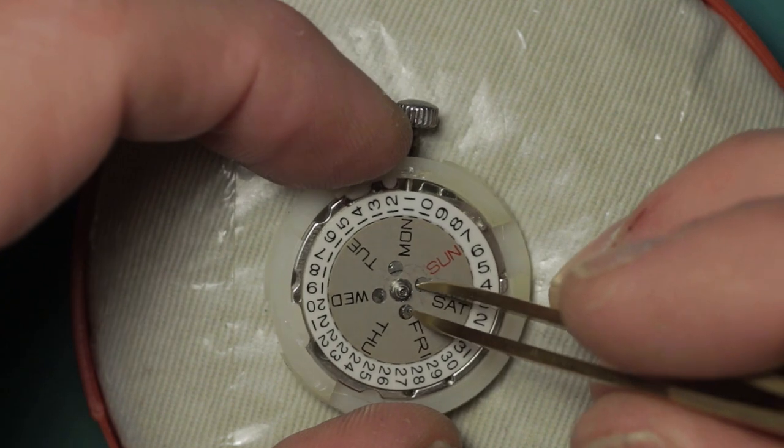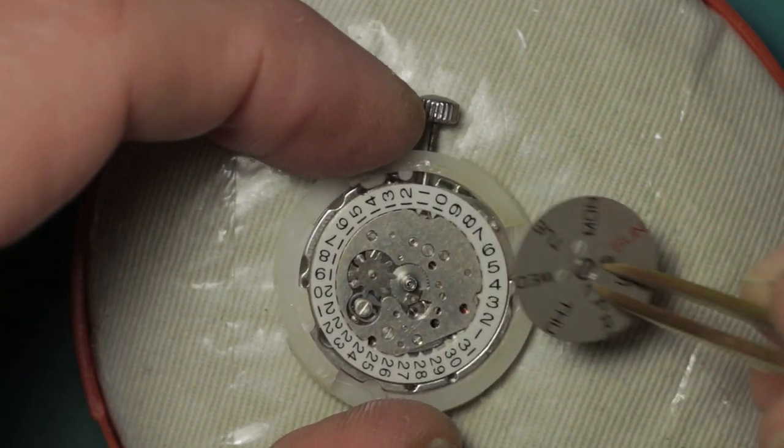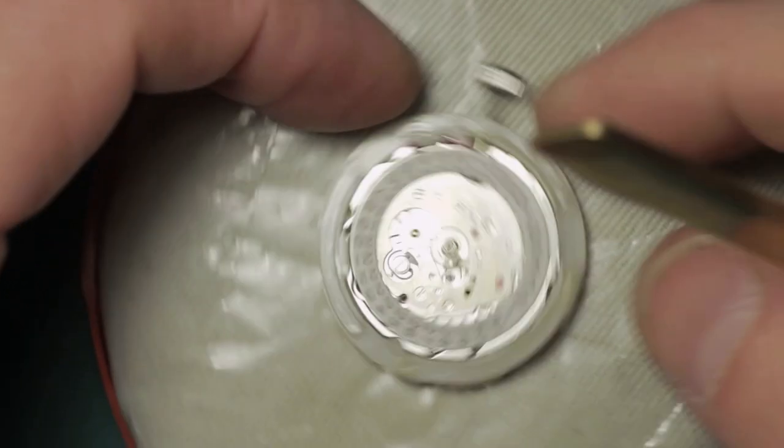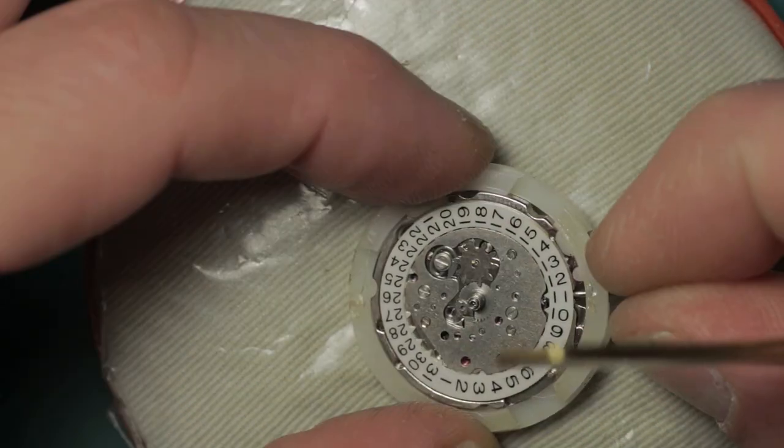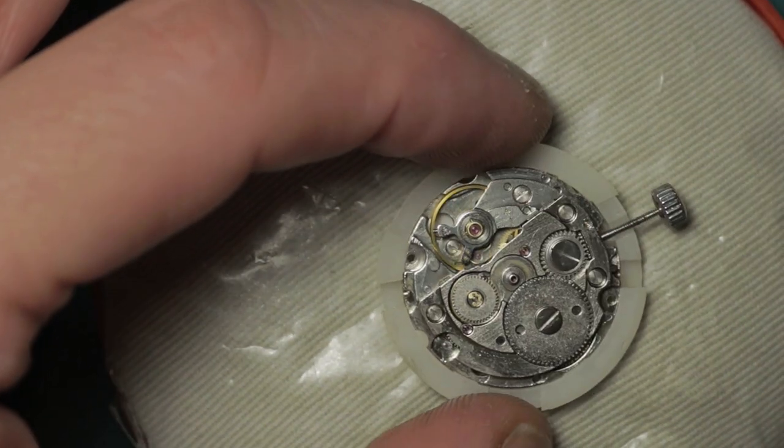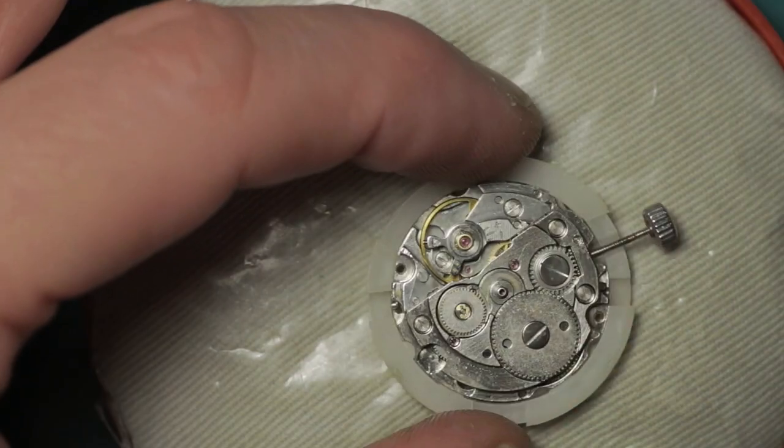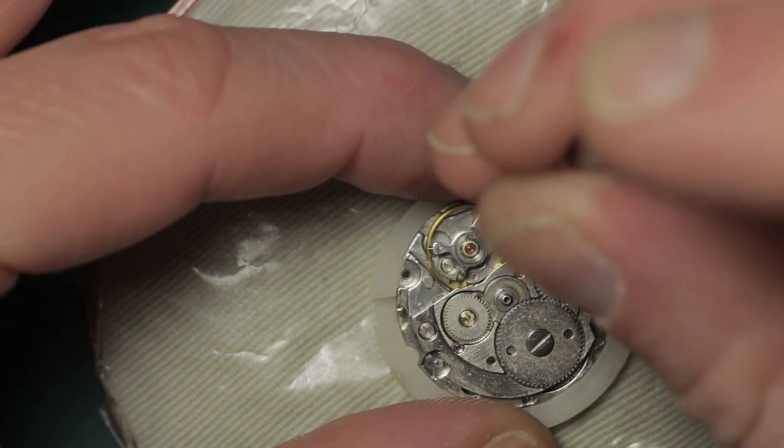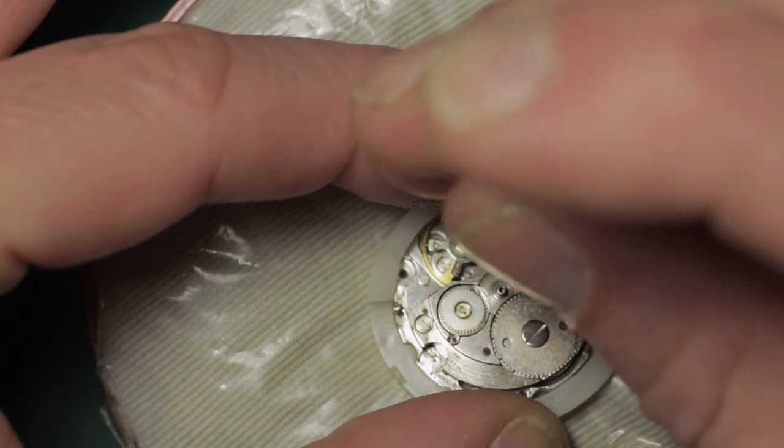The day wheel is held with a c-clip snap ring, just like many Seiko models you'll be familiar with, and then that lifts away once that's removed. At this point I turn over the movement and remove the balance and pop that aside to keep it safe.